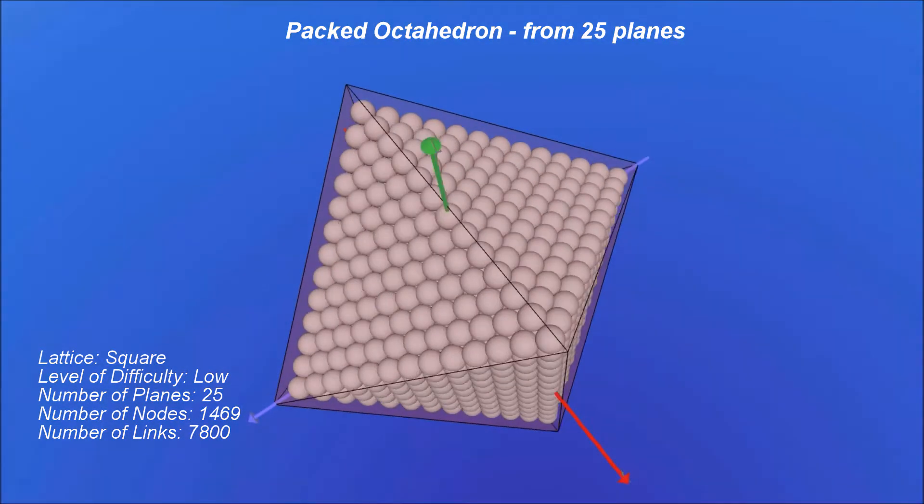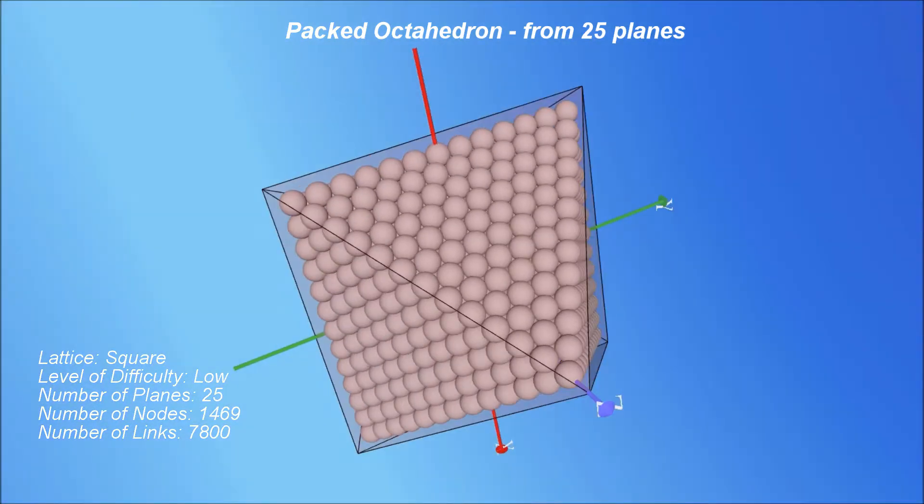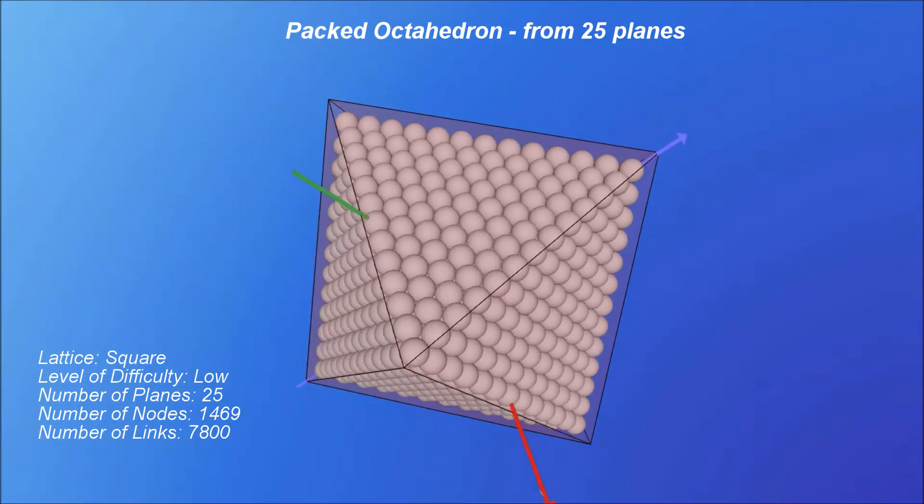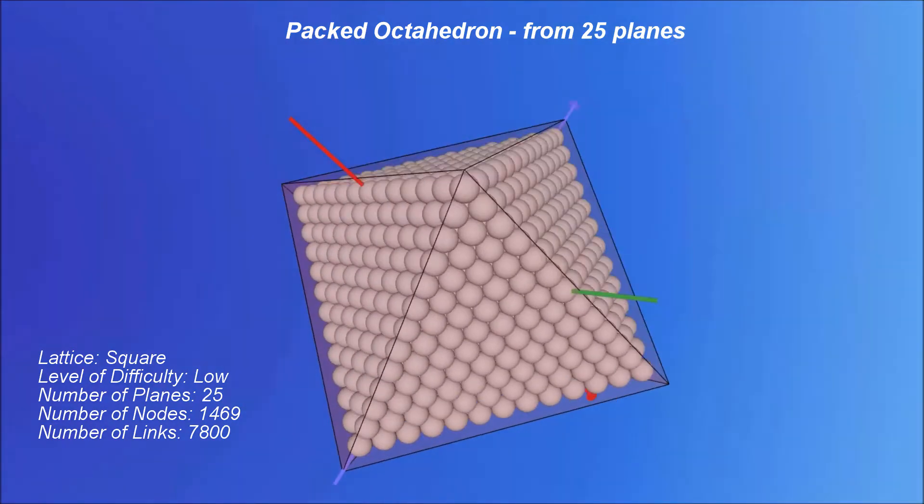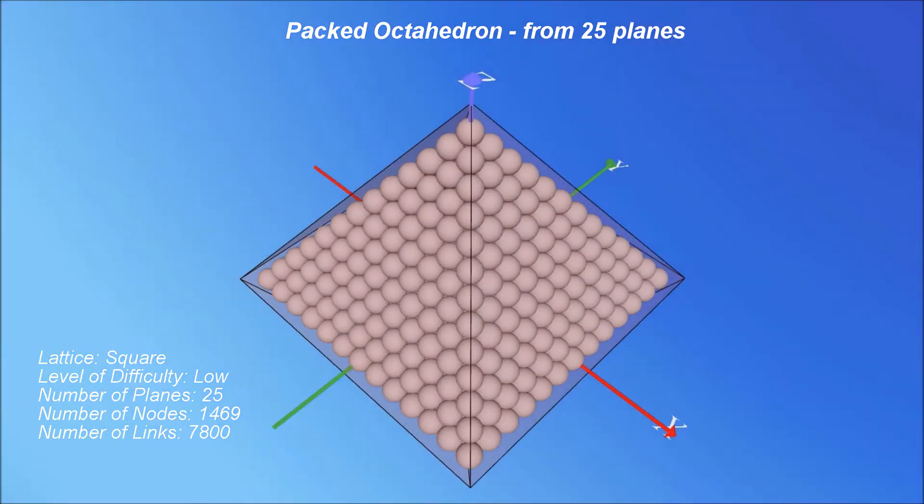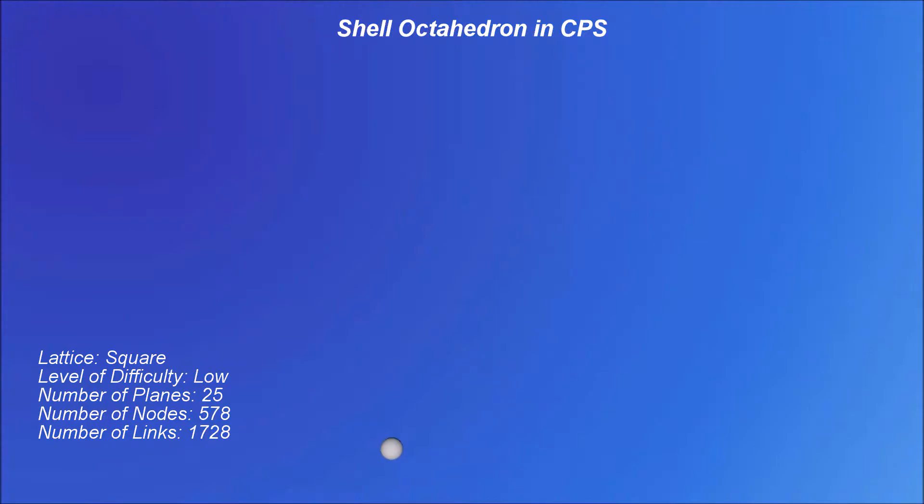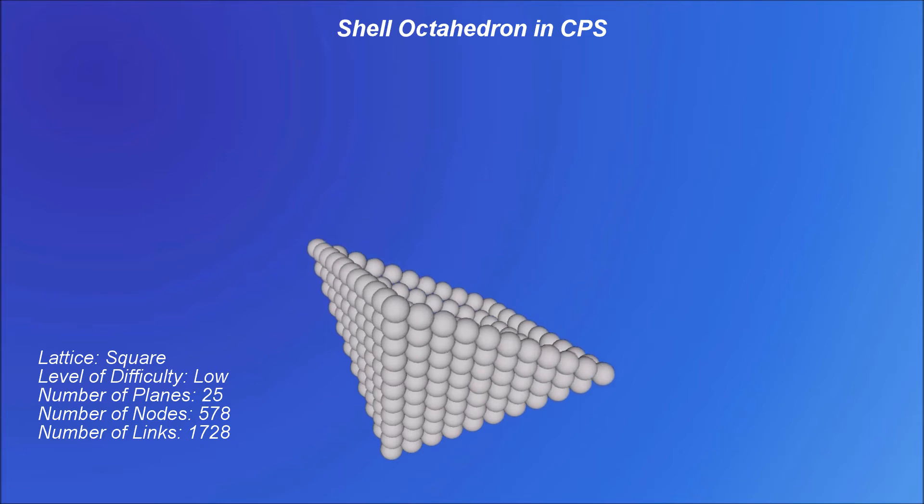There is still some limitation with this approach, one cannot escape the fact that these 3D models are virtual. When very complex structures, assembled from thousands of spheres, are seen on a 2D screen, they become difficult to manipulate and tricky to see and grasp some of their details.